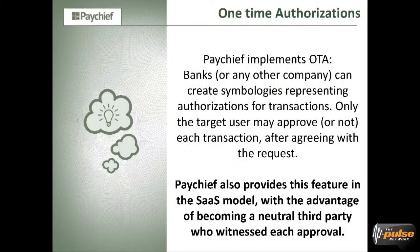Regarding OTA — one-time authorization — you can create symbologies representing authorizations for transactions. Only the target user may approve or not approve each transaction after agreeing with the request. This is very interesting because at the same time you can choose to authorize or not, and PayShift records the decision of the final user. So PayShift can be a neutral third party that witnesses each approval.